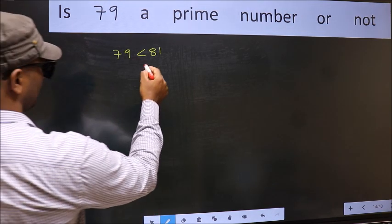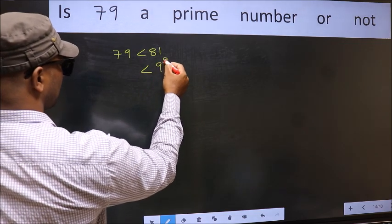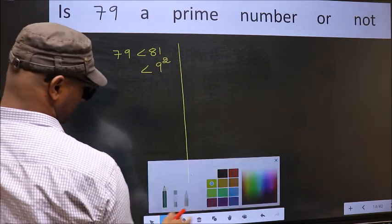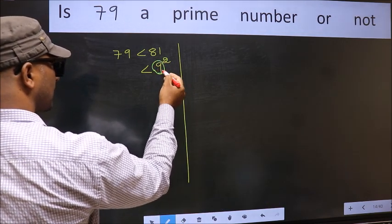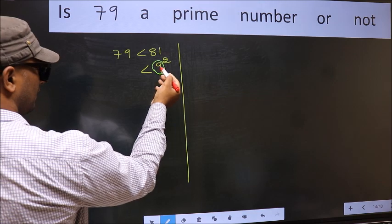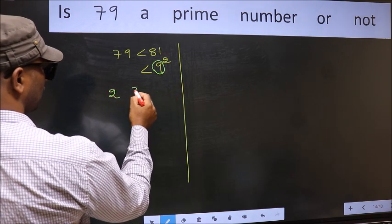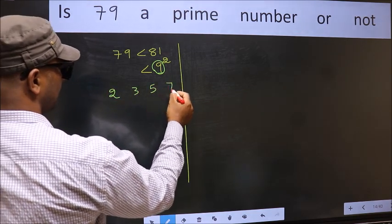Next, 81 is nothing but 9 squared. Now, you write all the prime numbers less than this number 9. They are 2, 3, 5, and 7.